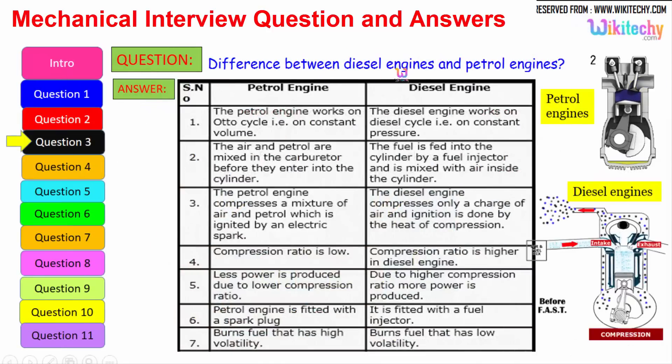Let us see the difference between the diesel engine and petrol engine. The petrol engine works on Otto cycle, therefore on constant volume, whereas the diesel engine works on the diesel cycle on constant pressure.